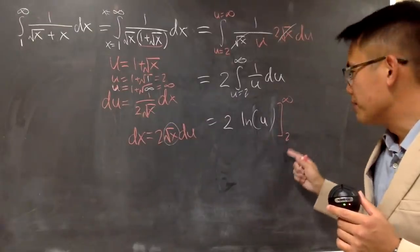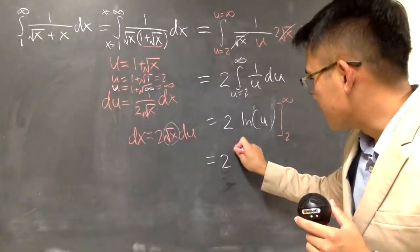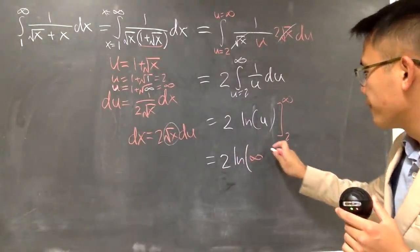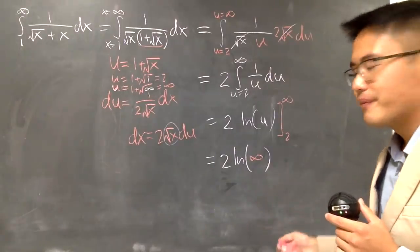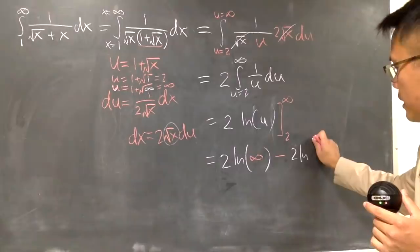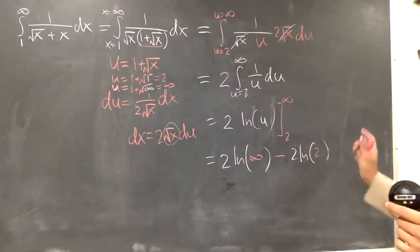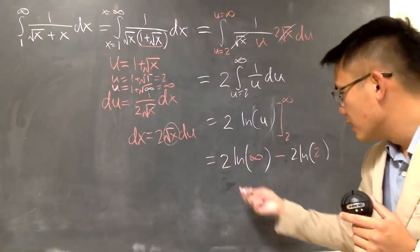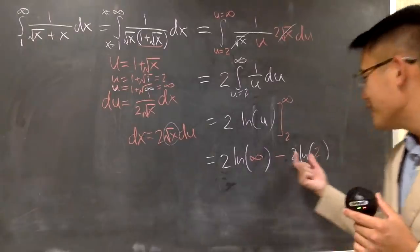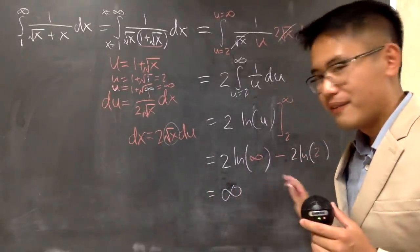Plug in infinity, and then plug in 2, and you subtract. So, you get 2 times ln of positive infinity. This is the first term, and then you minus 2 times ln of 2. We have that. But as you can see, ln of infinity is infinity, times 2 is still infinity, minus a finite number. All in all, you get infinity.